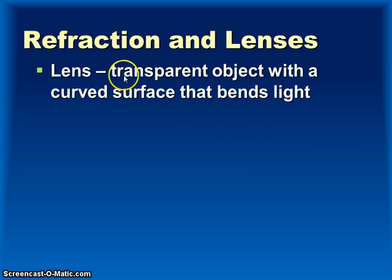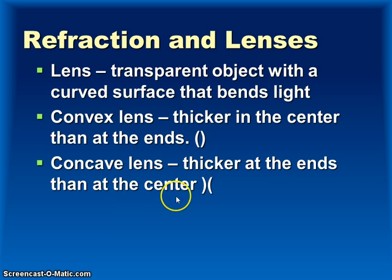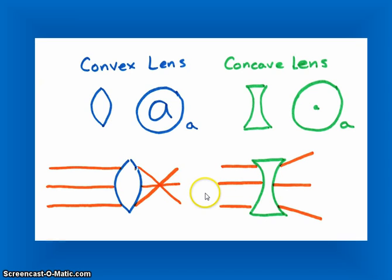Lenses are a transparent object with a curved surface that bends light. They can be made of glass, crystals, or anything that's clear. Convex lenses are thicker in the center than at the ends, curved outward. A concave lens is thicker at the ends than at the center — thinner in the middle, curved inward, like a cave. Concave lenses are caved in, while convex lenses are curved outward and are found in magnifying glasses, microscopes, and some telescopes.